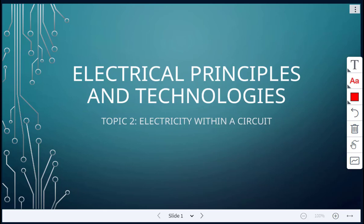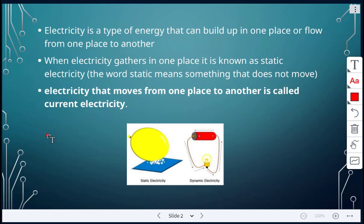Okay, so today's class for electrical principles and technologies is topic two, electricity within a circuit. So last class we talked about static electricity. Electricity is a type of energy that can build up in one place or flow from one place to another.